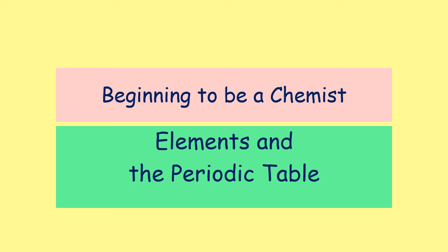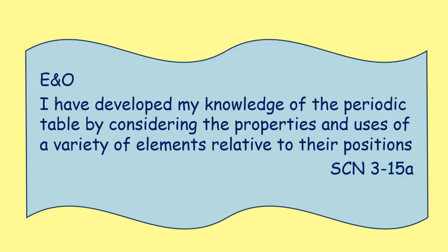In this lesson we're going to be looking at elements and the periodic table. The periodic table is essentially the alphabet of chemistry — it's how chemists see the world. Our learning outcome is developing knowledge of the periodic table by considering the properties and uses of various elements relative to their positions.